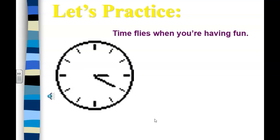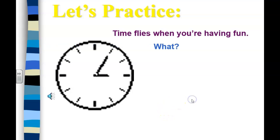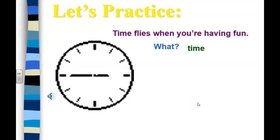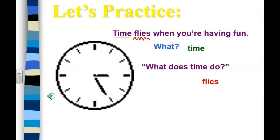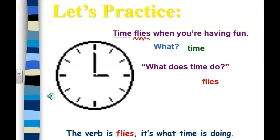'Time flies when you're having fun.' This one is tricky! What is your sentence about? Your sentence is about time. What does time do? It flies — that means it speeds by. So flies is your verb, or action word.